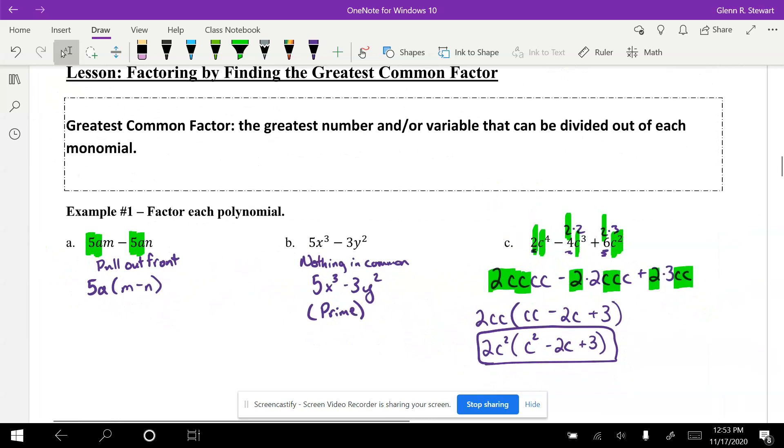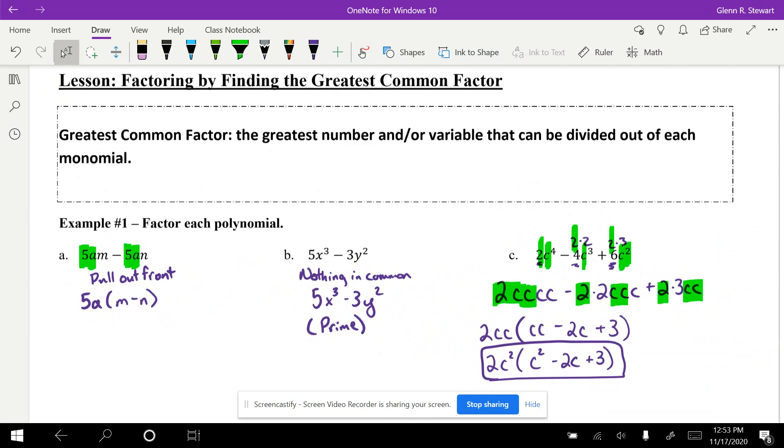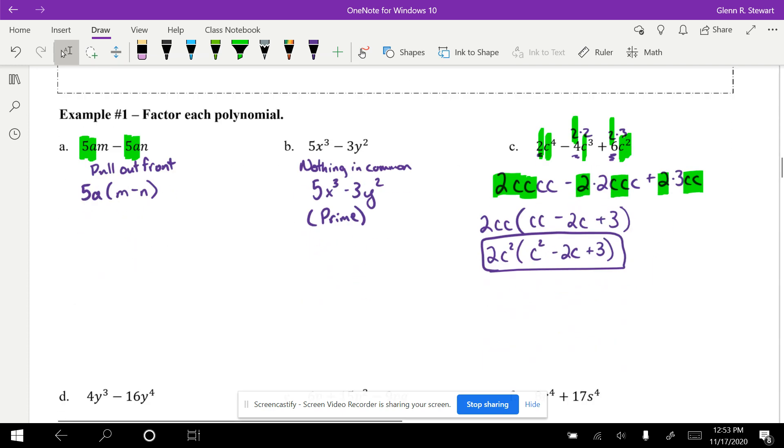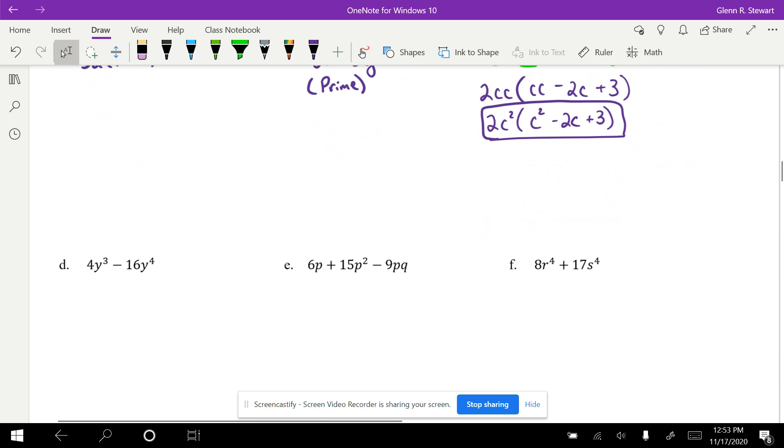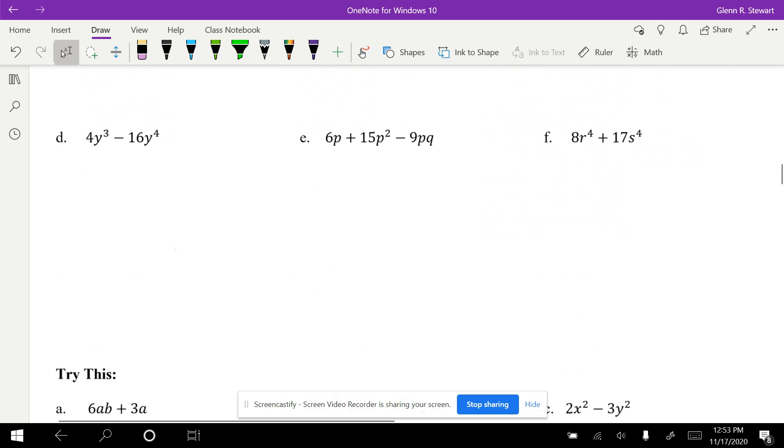We have already done these first three examples factoring by finding the greatest common factor. Just note that this is recorded. If you want to be part of the recording, raise your hand and participate. I will take questions when we are finished. Take a look at letter d. We're talking about greatest common factor.